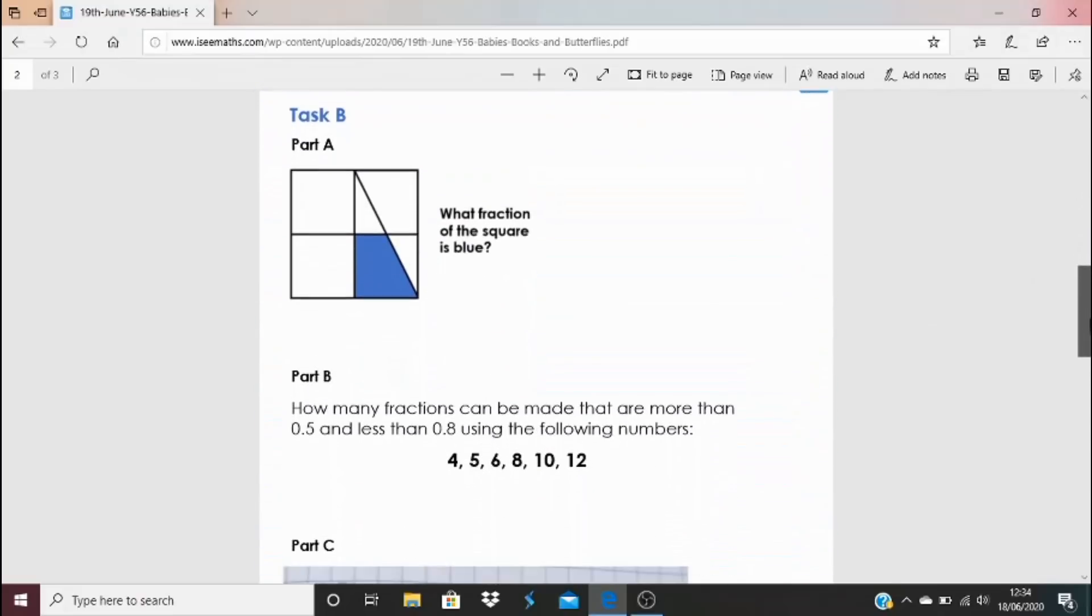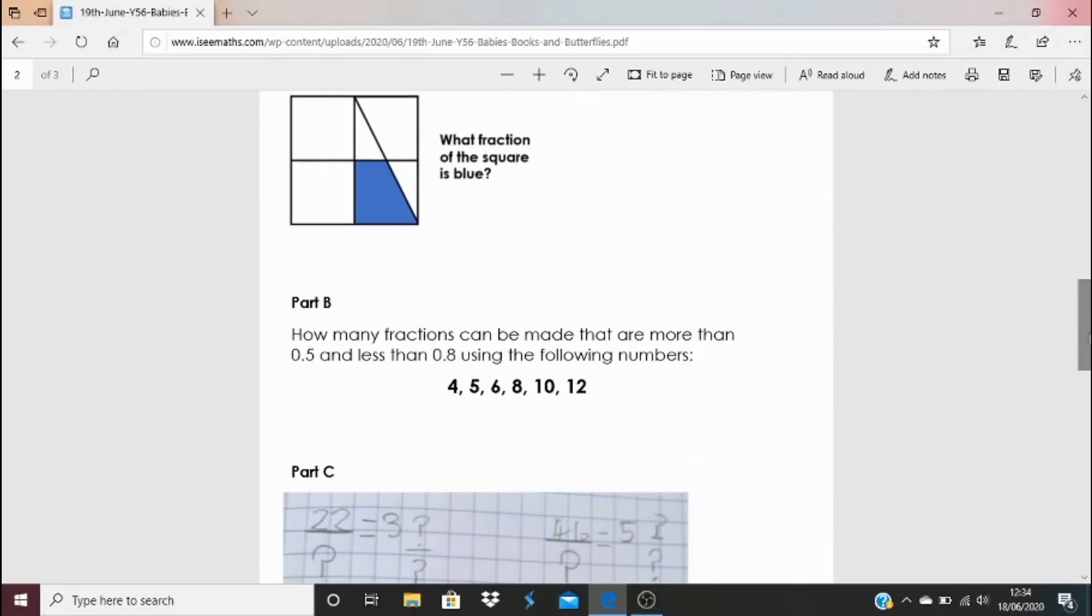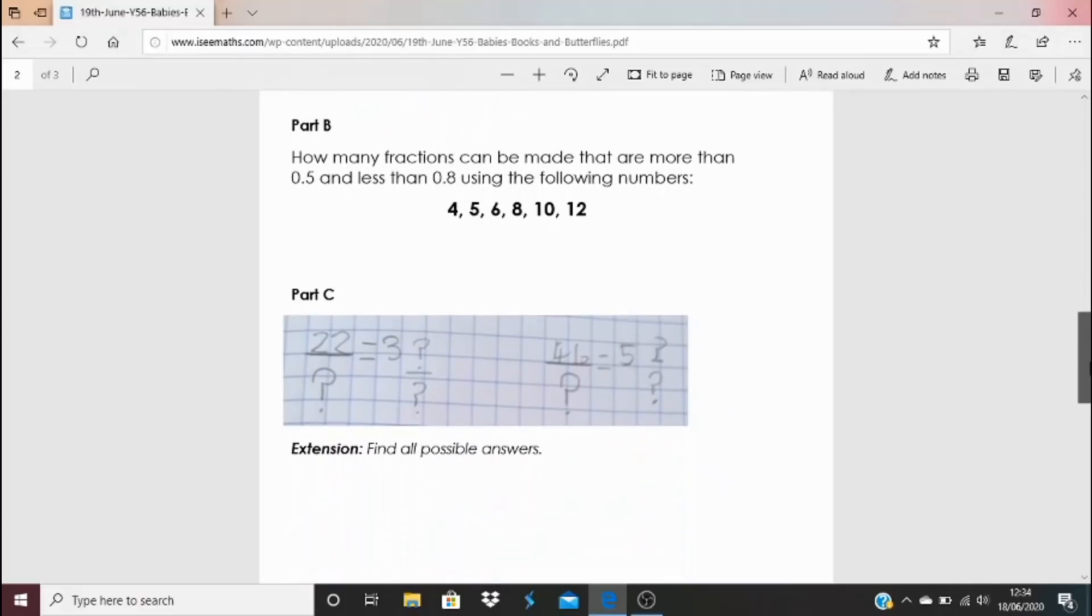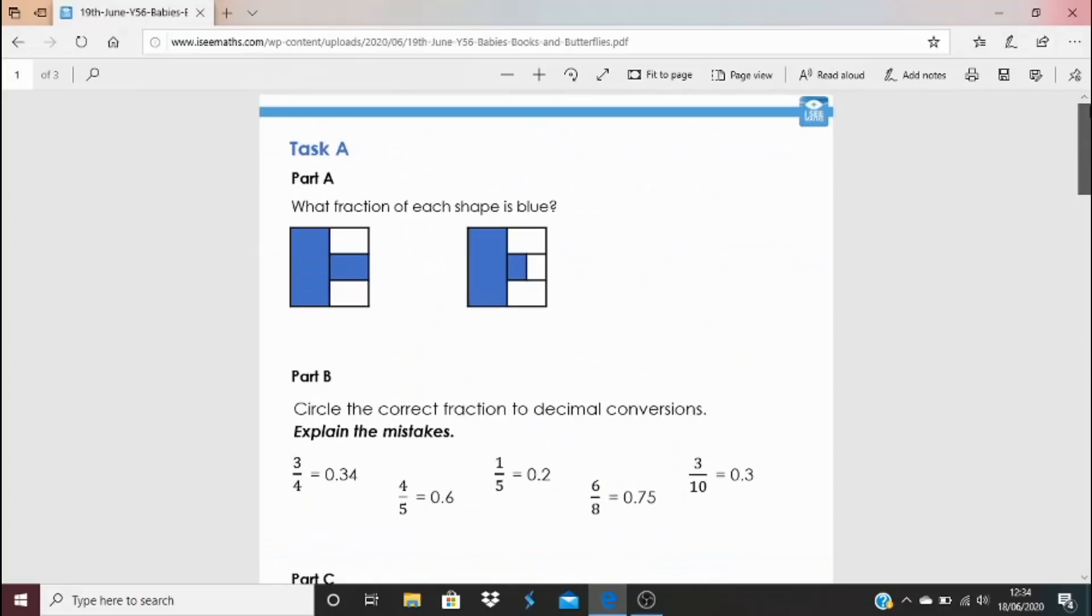Task B. Again, fraction of a shape here. Part B, how many fractions can be made that are more than 0.5 and less than 0.8, using these numbers as the numerator or the denominator? Now part C is a question that's been sent in. Love this one. Can you find different possible answers? This one is a 46, just to be really super clear on that. Answers are at the bottom. Enjoy.